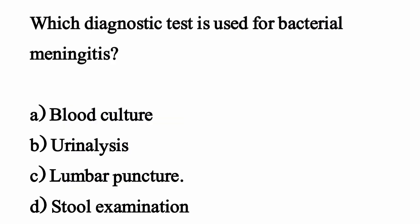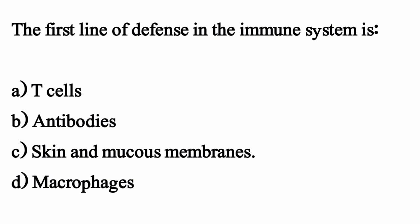Which diagnostic test is used for bacterial meningitis? The correct option is option C: lumbar puncture. The first line of defense in the immune system is — the correct option is option C: skin and mucous membranes.